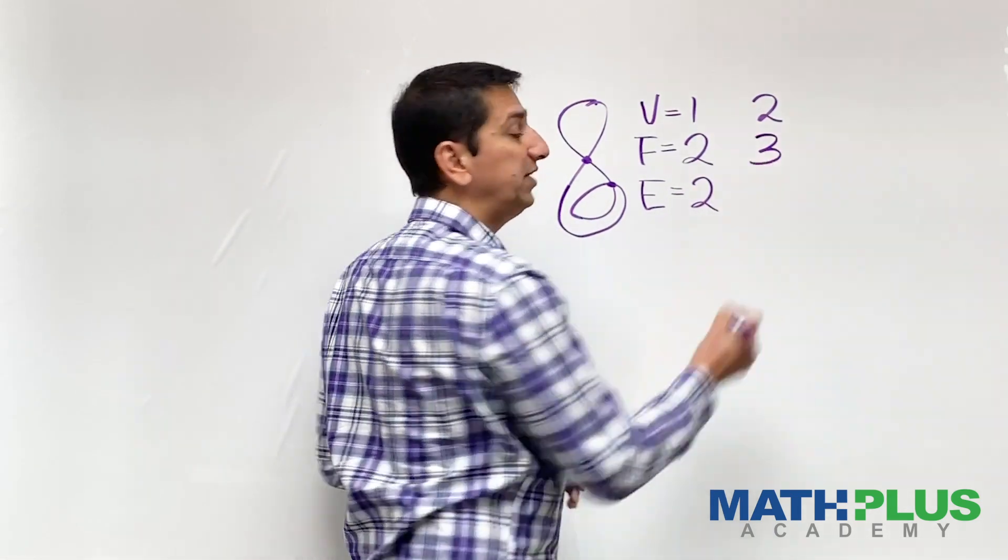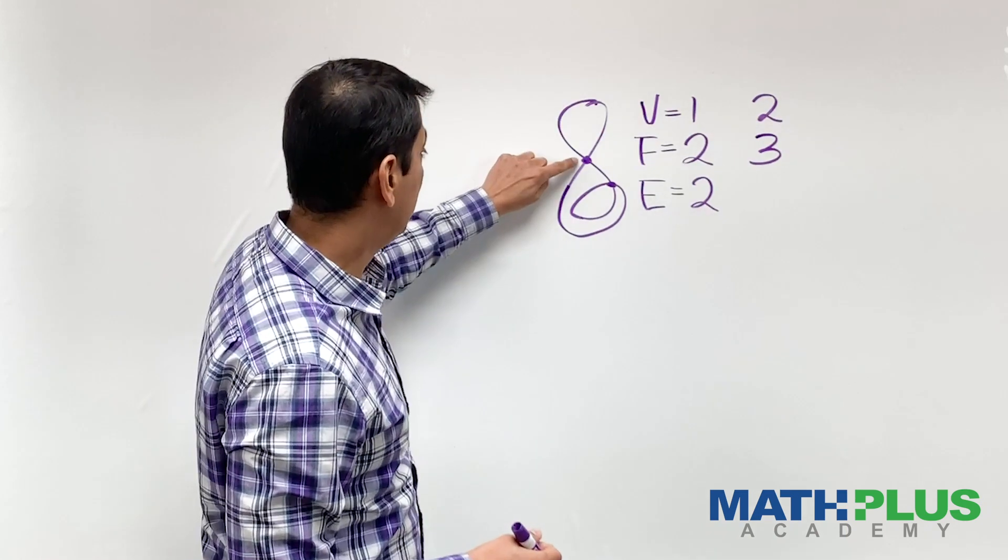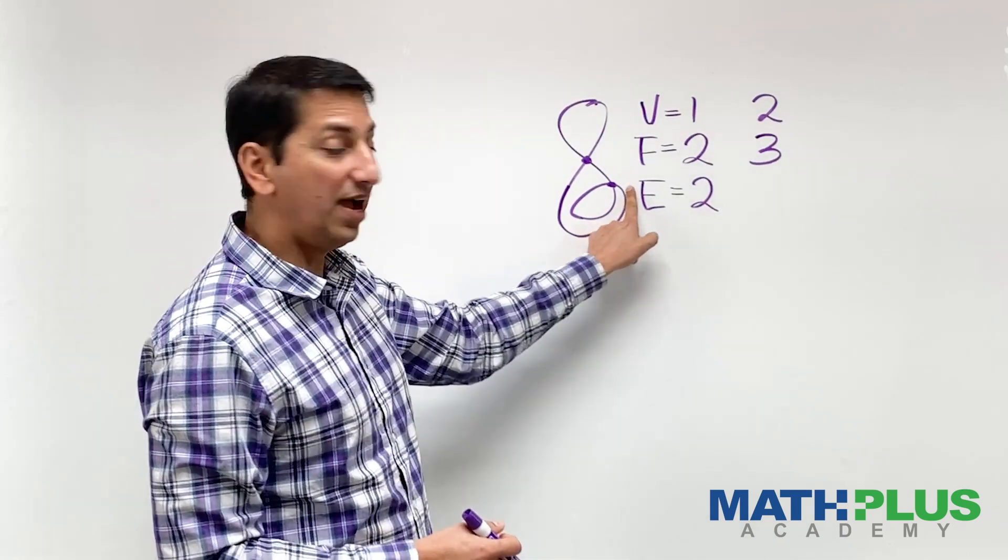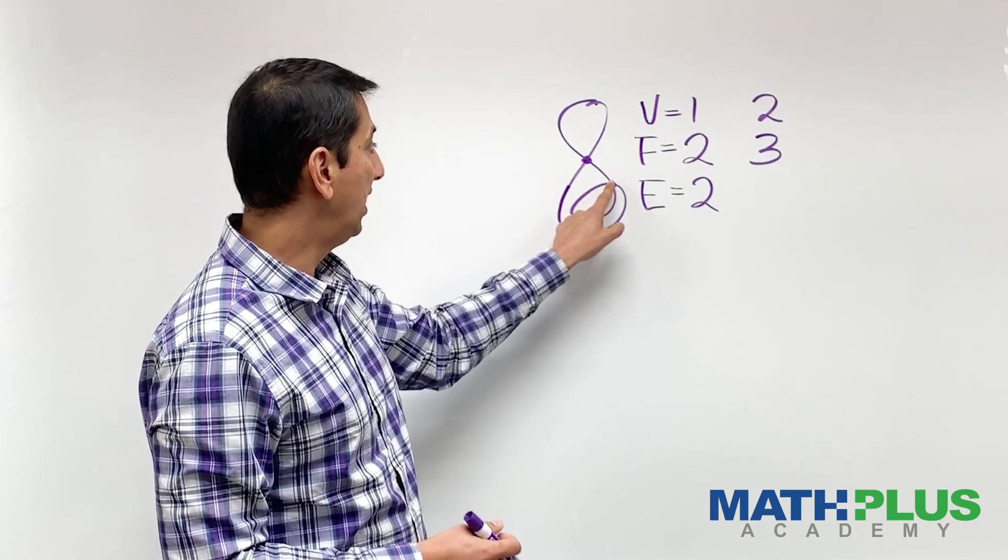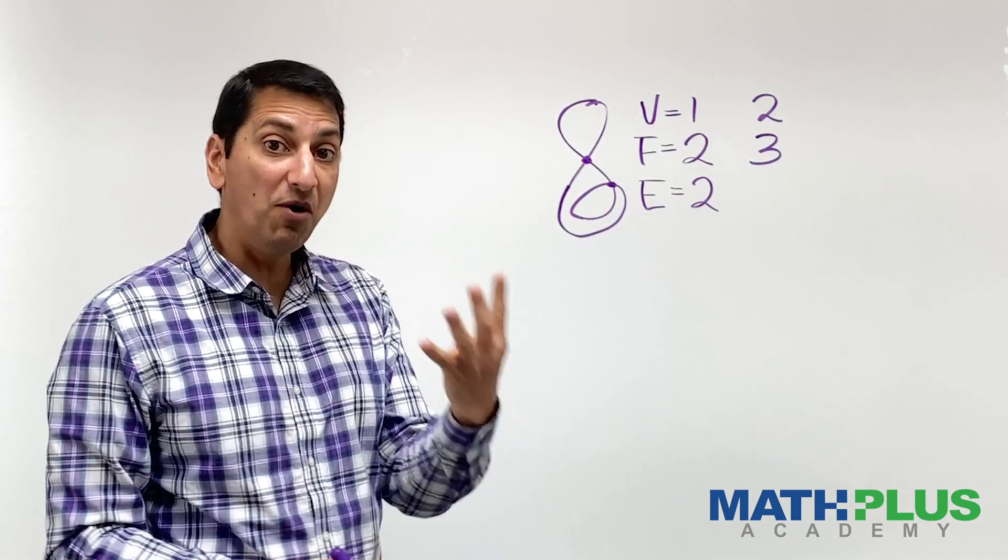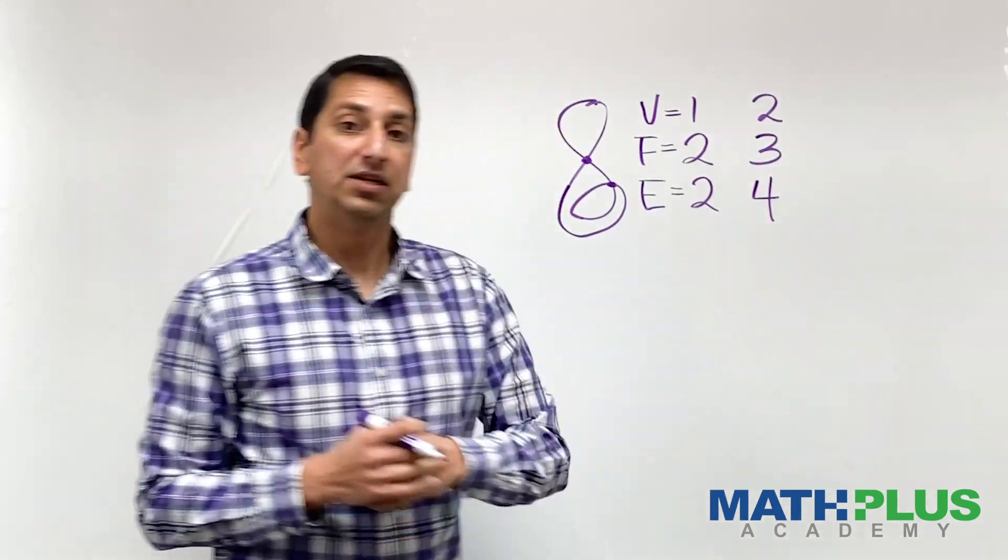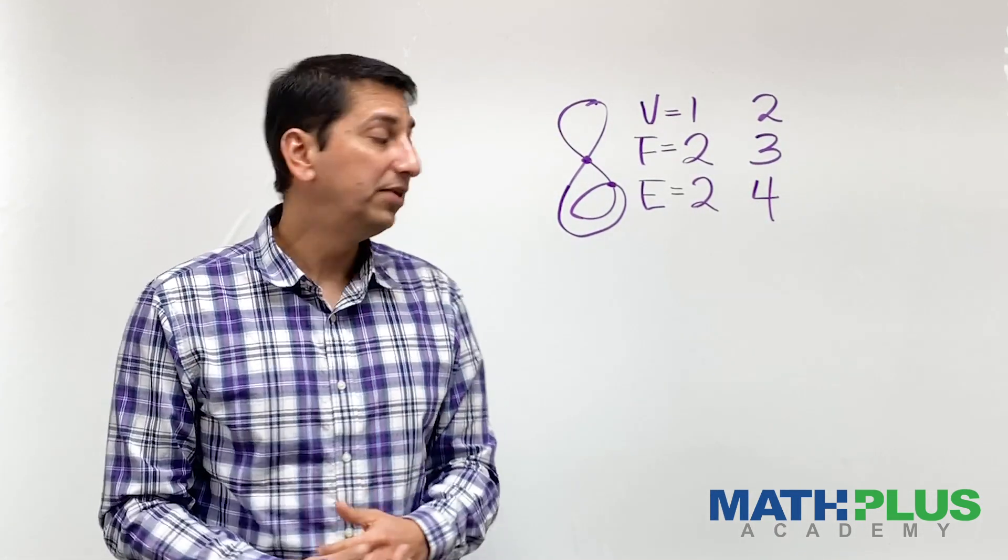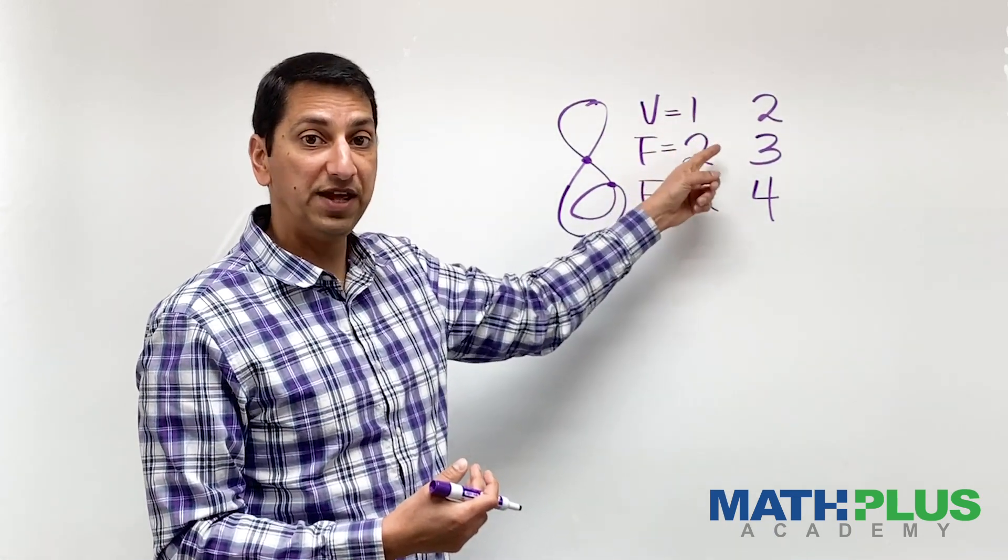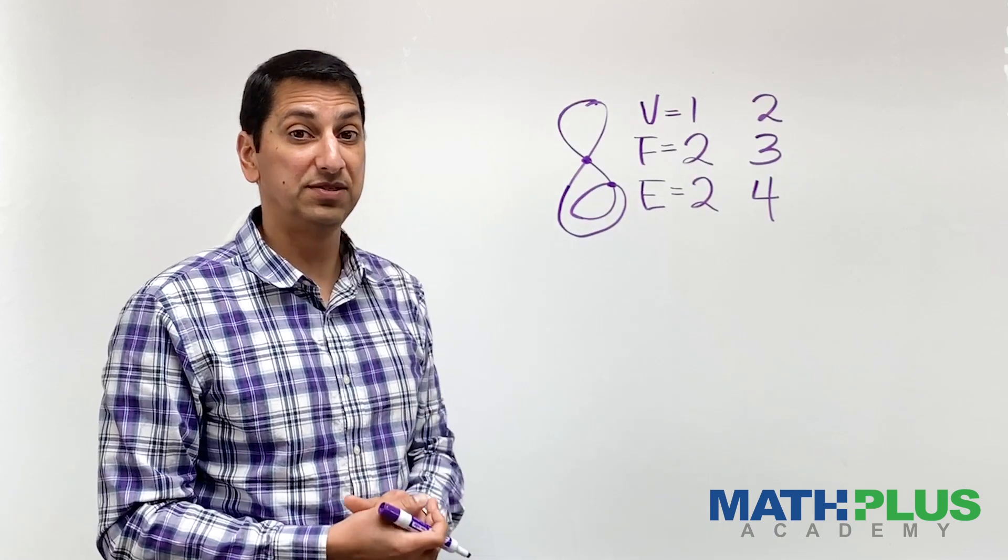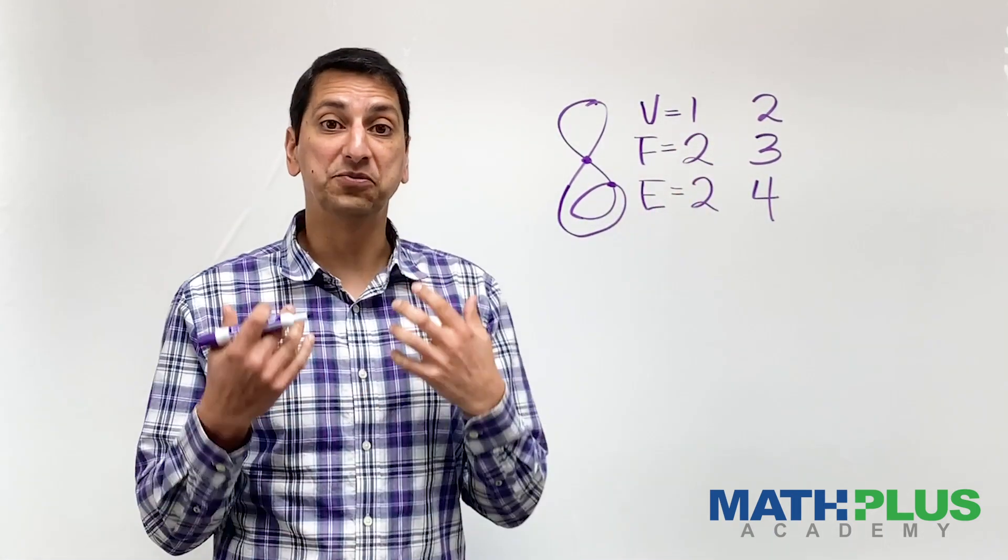Now what about the edges? Still have the one at the top. I have this one around here, kind of where it was before but a little bit different shaped. And then I got a new one there and then one more. So I actually have four edges now. So somehow by changing this I've created a new vertex, a new face, and two new edges. And if I do the math, five minus four is one.